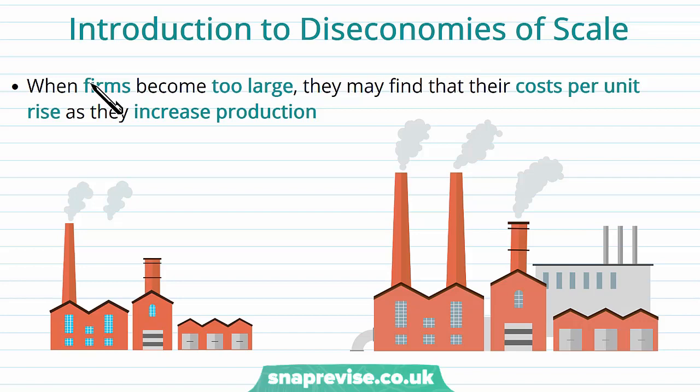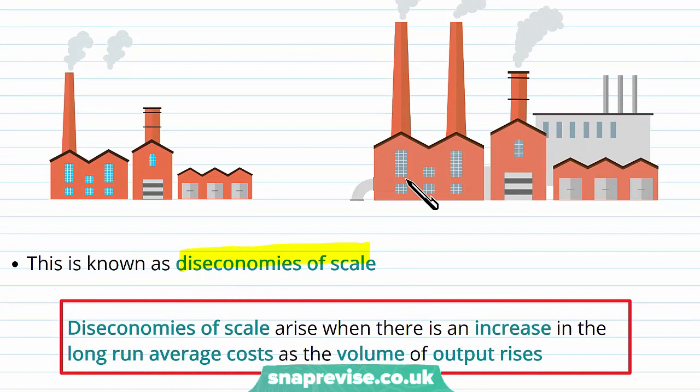Now let's consider the other side of the coin, which is diseconomies of scale. This is experienced when firms become too large and they may find their cost per unit rise as they increase production. And this is what we know as diseconomies of scale.